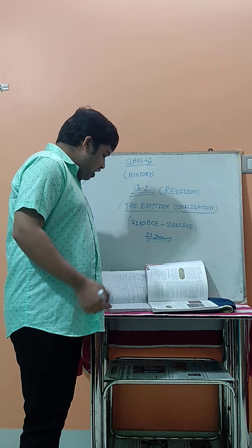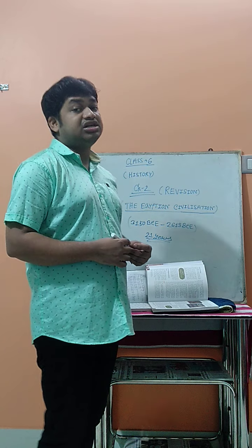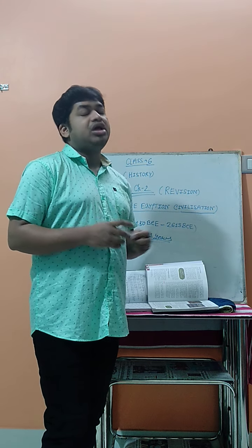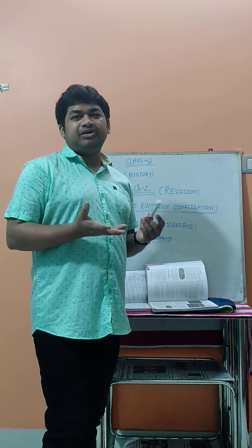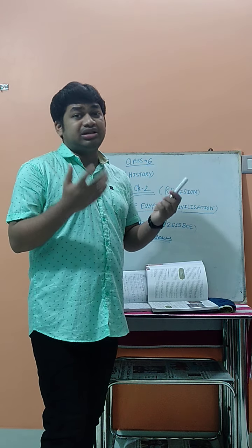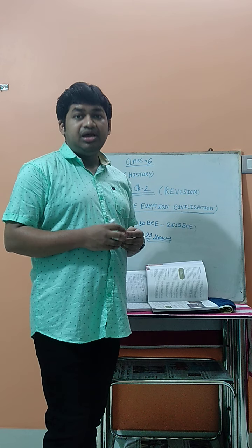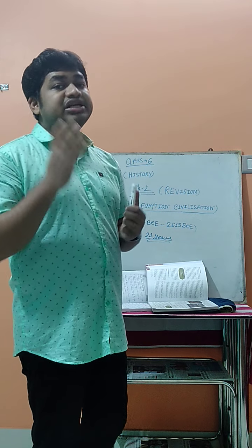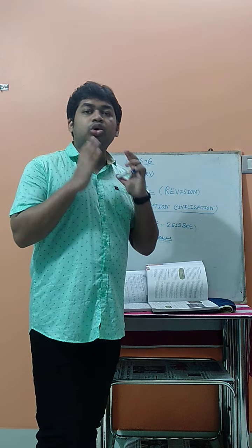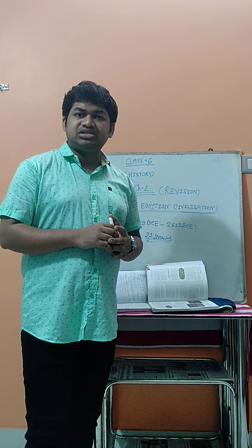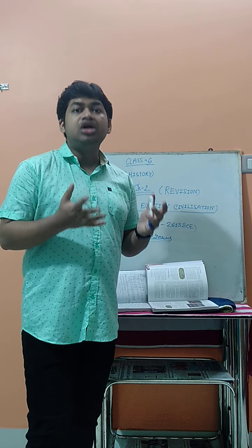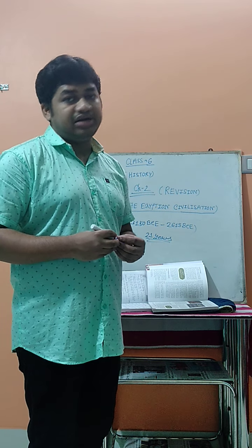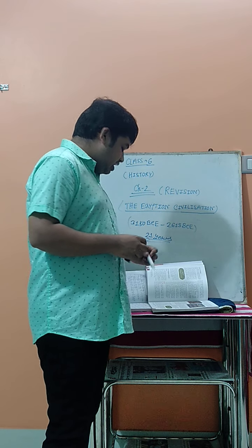The next question is: why was kohl important for the Egyptian civilization? Kohl is something they used in their eyes — but not for makeup or appearance. It was actually very useful. When they applied kohl to their eyes, it protected them from the harsh sunlight, because the temperature was very high. It also protected them from sand dust. These two reasons are why they wore kohl.